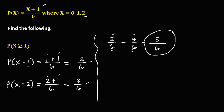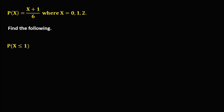For p(x) less than or equal to 1, since we include equal to 1, start with p(x = 1). From this equation, x is equal to 1, so we have (1 + 1) over 6. Simplifying, that's 2 over 6.